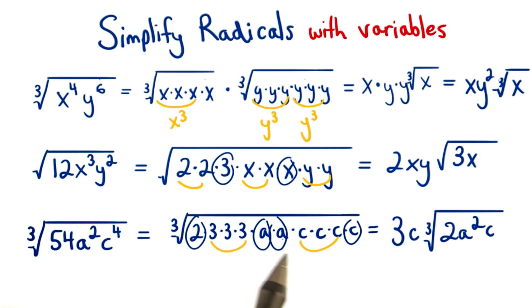These factors don't appear in a triple, so we have to leave them inside of the cube root. We'll have 2a squared times C in our cube root. This gives us our final result.